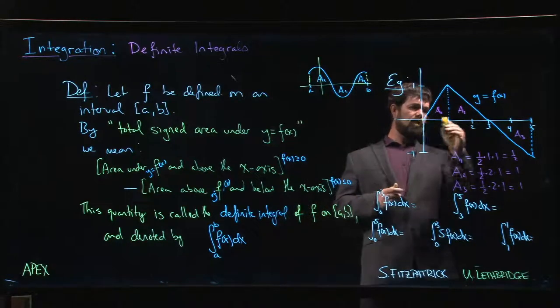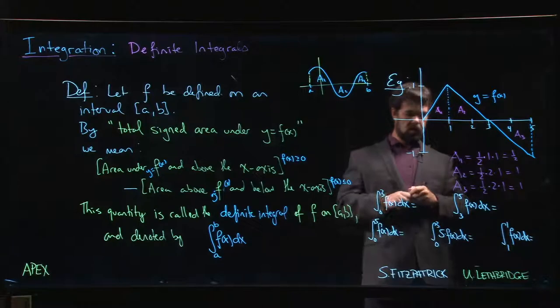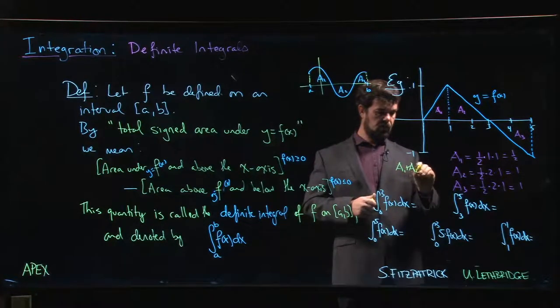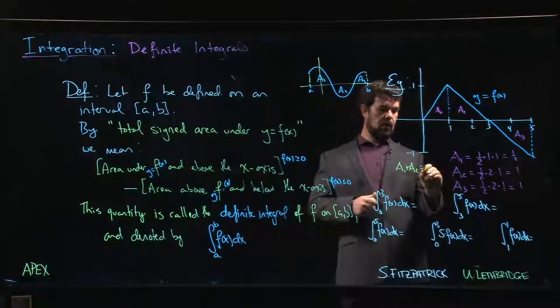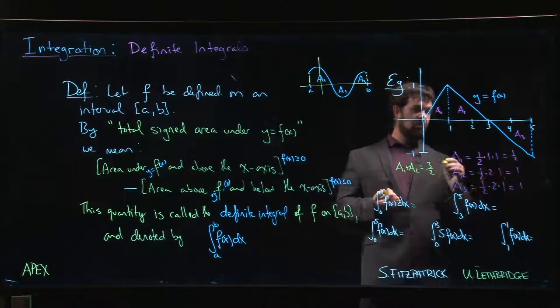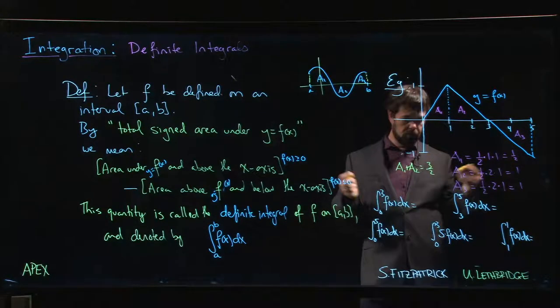So area 1, in fact, we could have done the whole thing. This triangle has base 3 height 1, so if we're doing A1 plus A2, it's one half, 3 times 1 is 3 over 2. But of course, that's the same thing as saying that this area is a half, that area is 1. We add them together, we get 3 over 2.